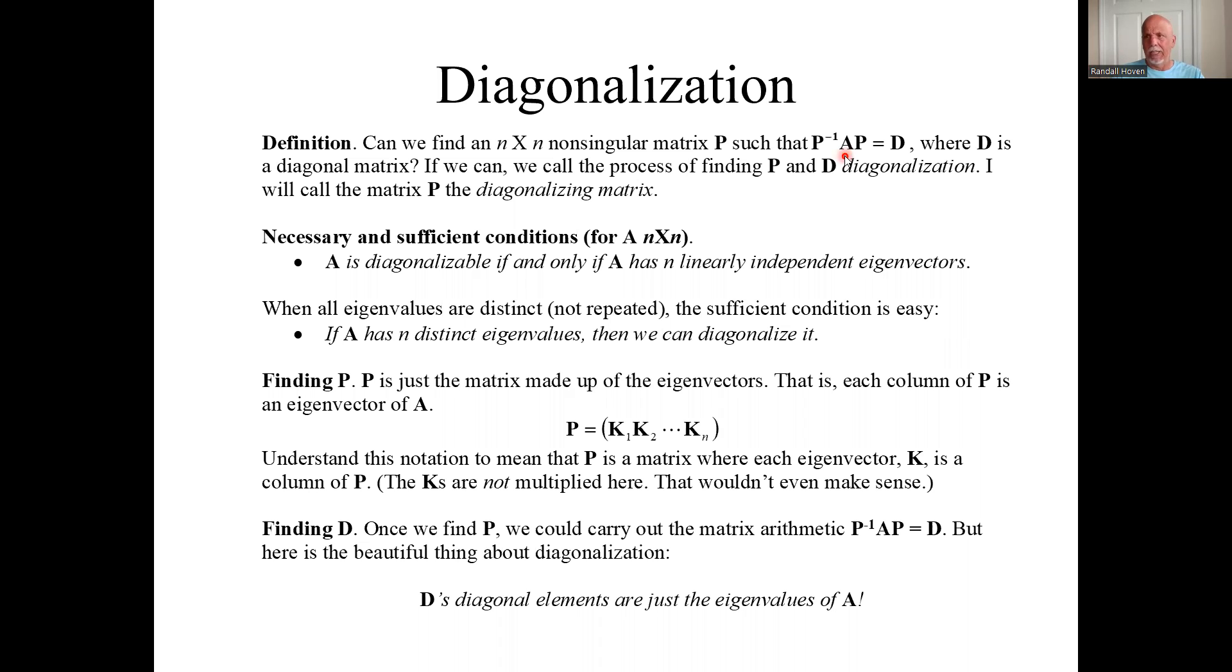We're given the matrix A, a square matrix n by n. Is there a matrix P, an invertible matrix P, such that P inverse AP equals a diagonal matrix D? Remember what a diagonal matrix is? It's all zeros off the main diagonal. The only non-zero numbers are the main diagonal terms. If we could find the P and D, that's called diagonalization.